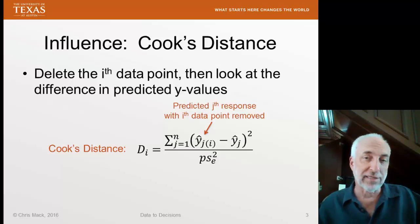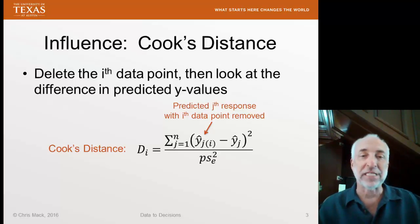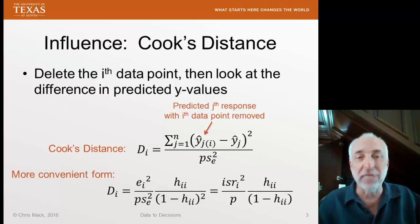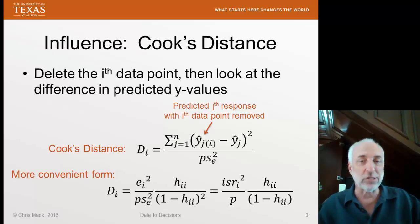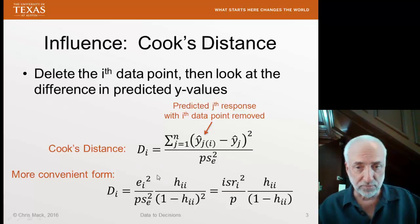If I were to take out the i-th data point and then fit the model again and then predict what the j-th data would look like without the influence of i, that would be this number. The difference between including the i-th data point and excluding the i-th data point is this difference. If I square that difference and sum them all up for every single data point in my data set, I get the sum of the squared differences in the predicted values with the i-th data point included or not. I'm going to normalize that by dividing by the variance of all the residuals of the total fit with i-th included multiplied by p, the number of parameters in the model.